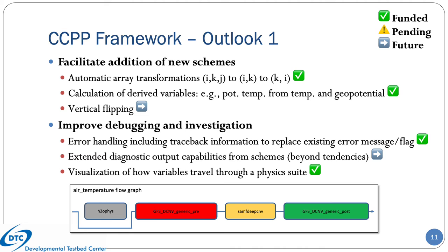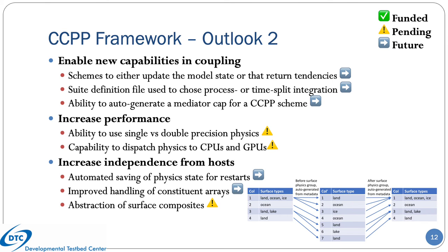To improve debugging and investigation of problems, we will improve error handling, hope to extend diagnostic capabilities, and are already working on a visualization tool that shows how variables travel through a physics suite. This diagram shows an example for air temperature, indicating that it is not touched by the photolysis parameterization but is modified by deep convection. We would also like to enable new capabilities in coupling, allowing schemes to have the dual capability of updating the model state or returning tendencies, and to auto-generate a mediator cap for a CCPP suite or scheme, allowing a given scheme such as a land surface model to be run through CCPP or as a component of an Earth system model.